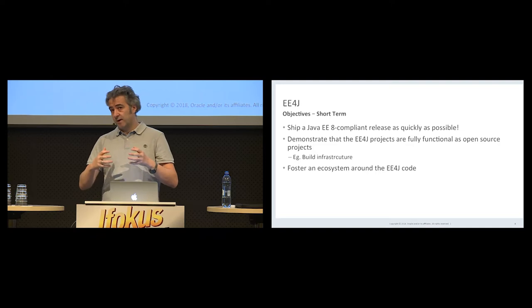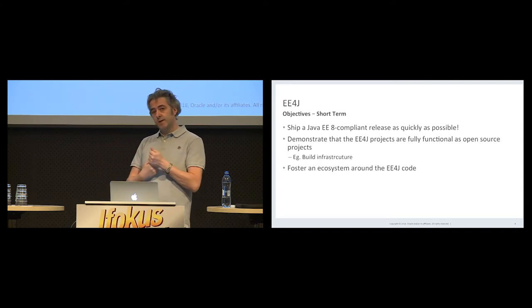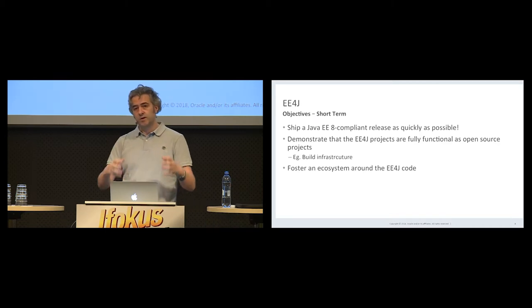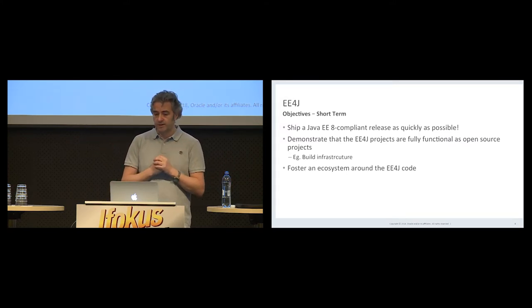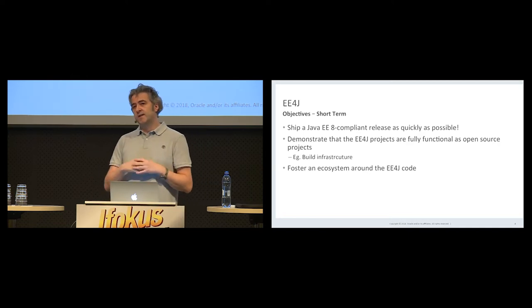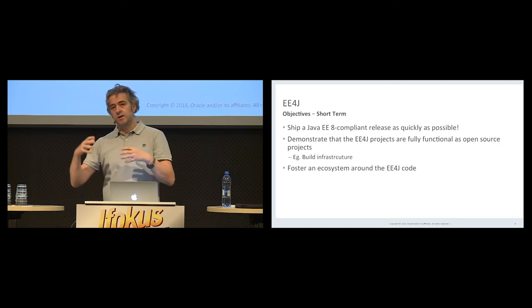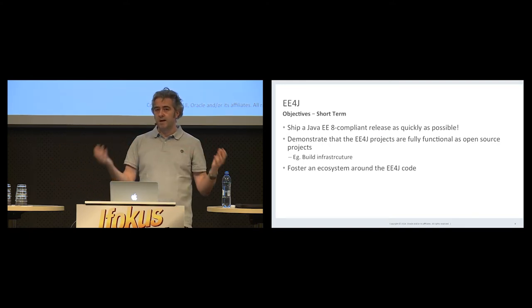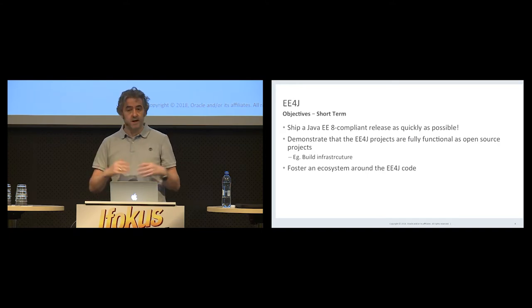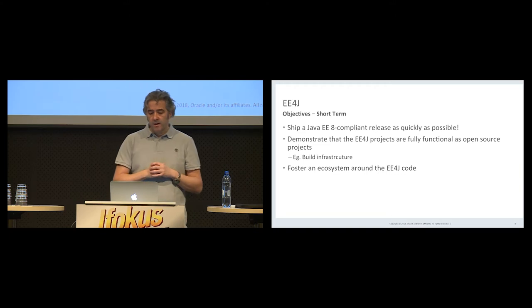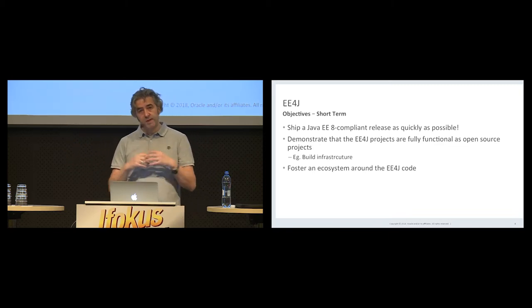We need to do that for multiple reasons. One is to make sure that everything is working on the EE4J side — all the codebase, all the testing suite. Given that compatibility is a key aspect of the platform, we want to make sure that whenever we have an EE4J implementation, we can verify it's compliant to the specification. We also need to do this as a proof that you can take the EE4J codebase and everything works, including the build infrastructure, all the repositories, everything on the Maven side.